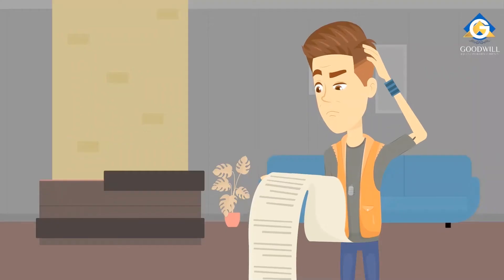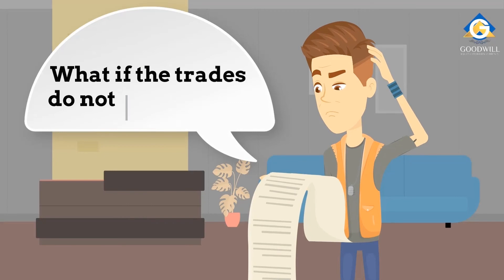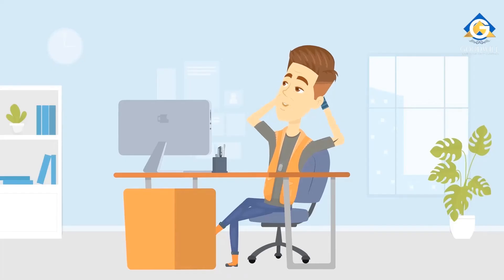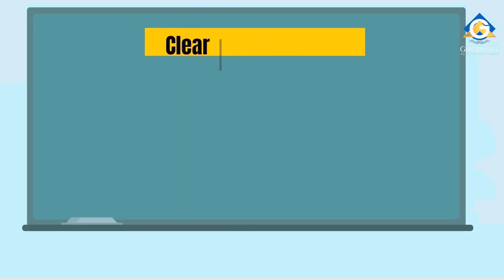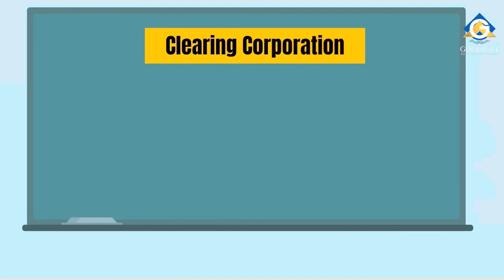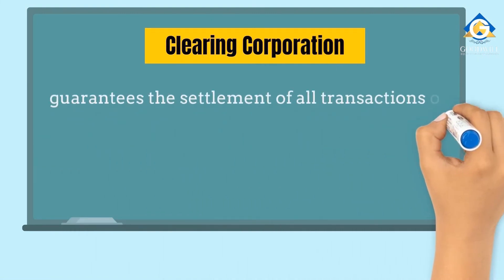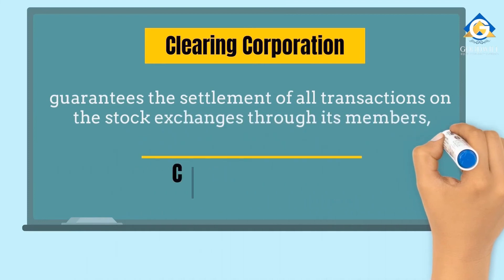Rahul is not fully convinced and has one more doubt: what if the trades do not go through? Who guarantees his payments? Rahul doesn't need to worry about this because there is another market intermediary called the Clearing Corporation, which guarantees the settlement of all transactions on the stock exchanges through its members, called Clearing Members.